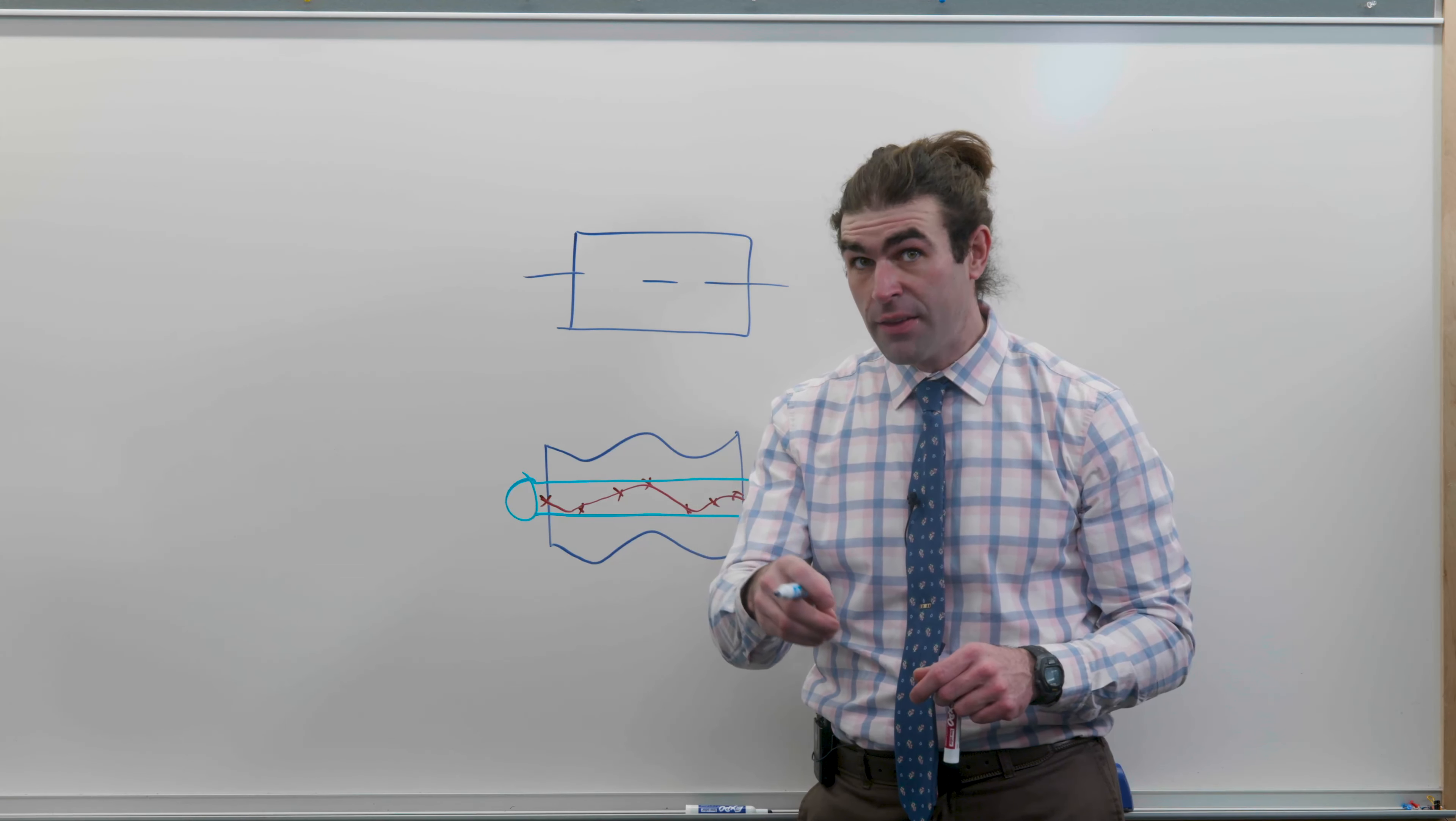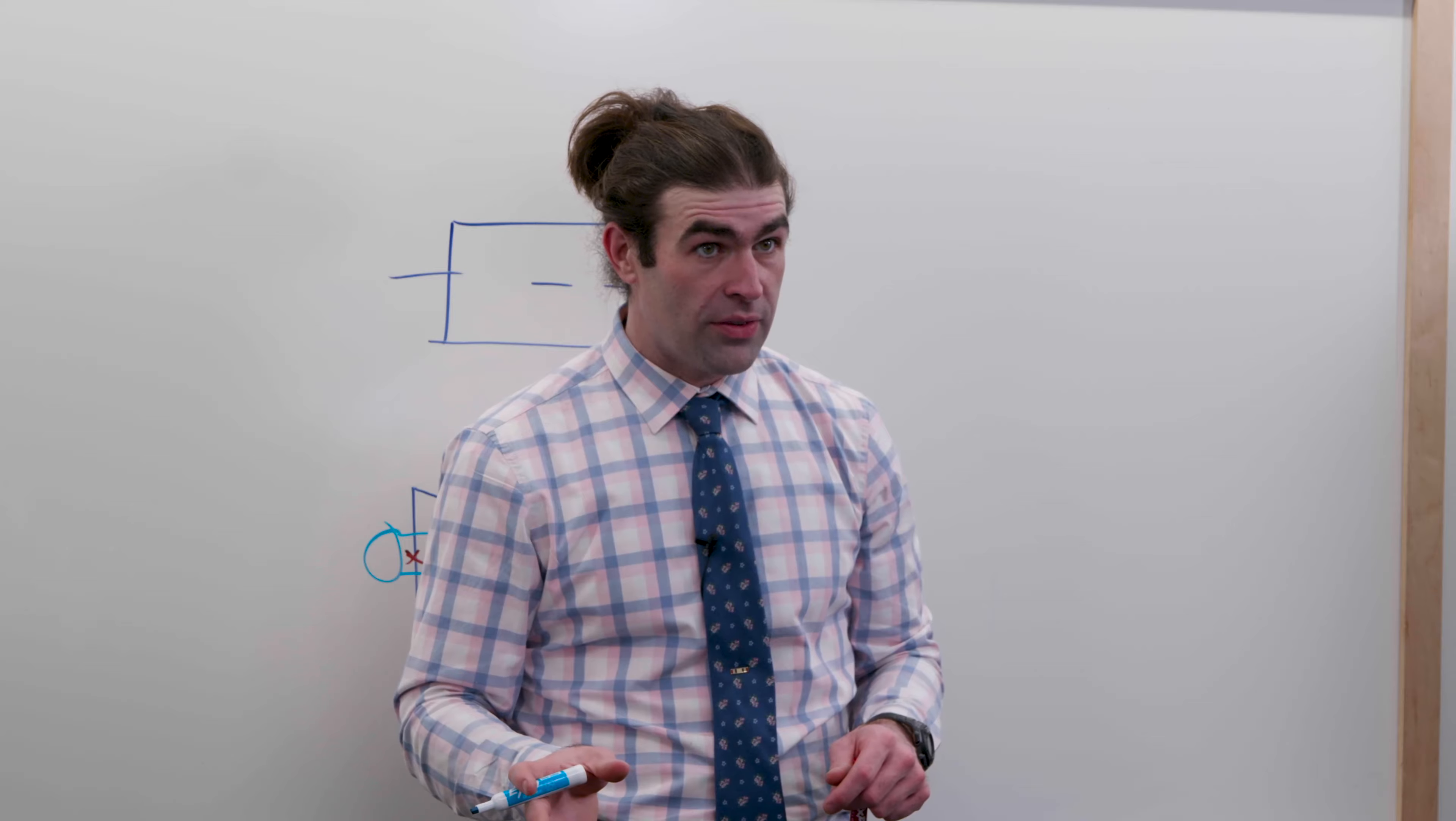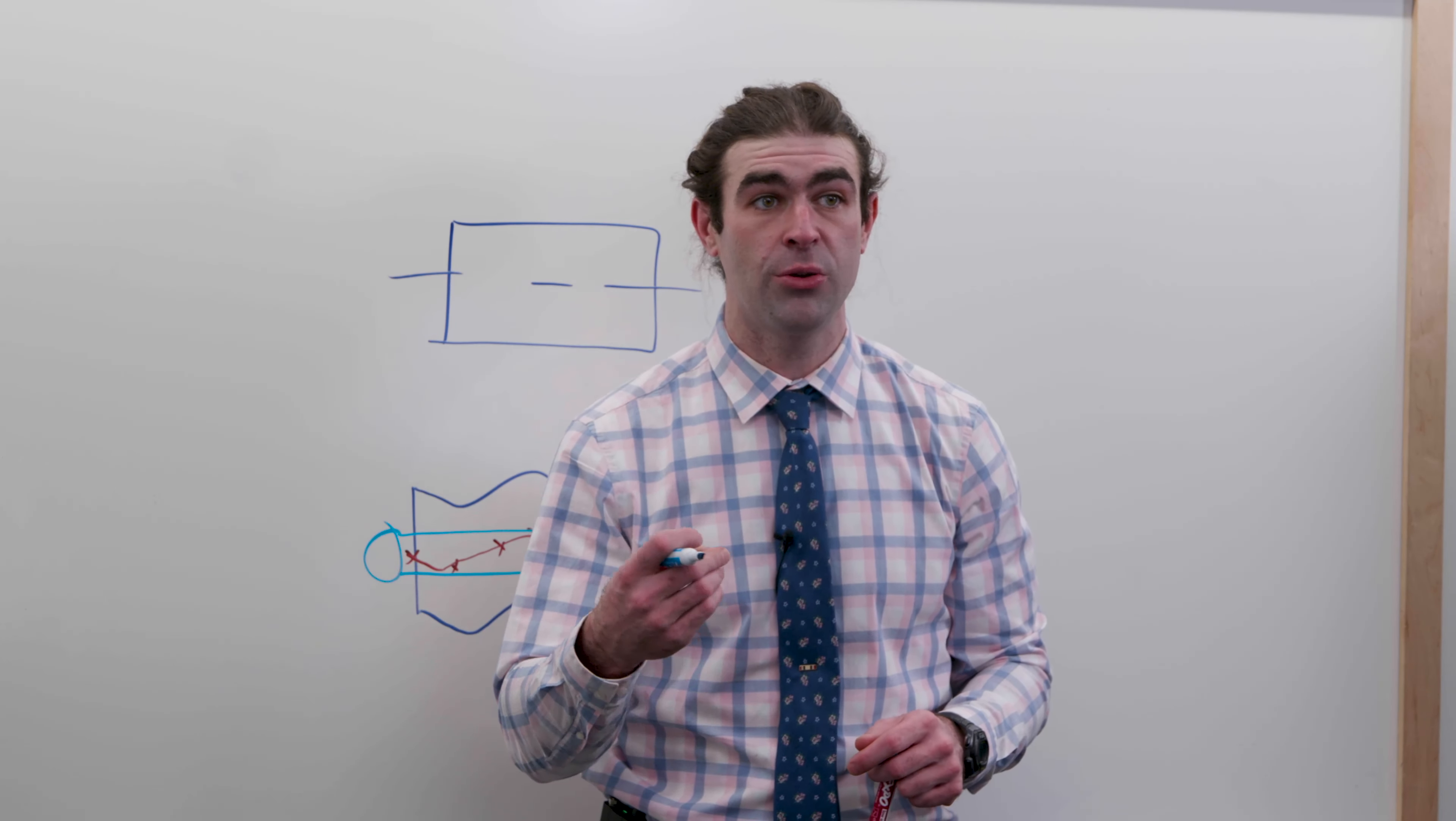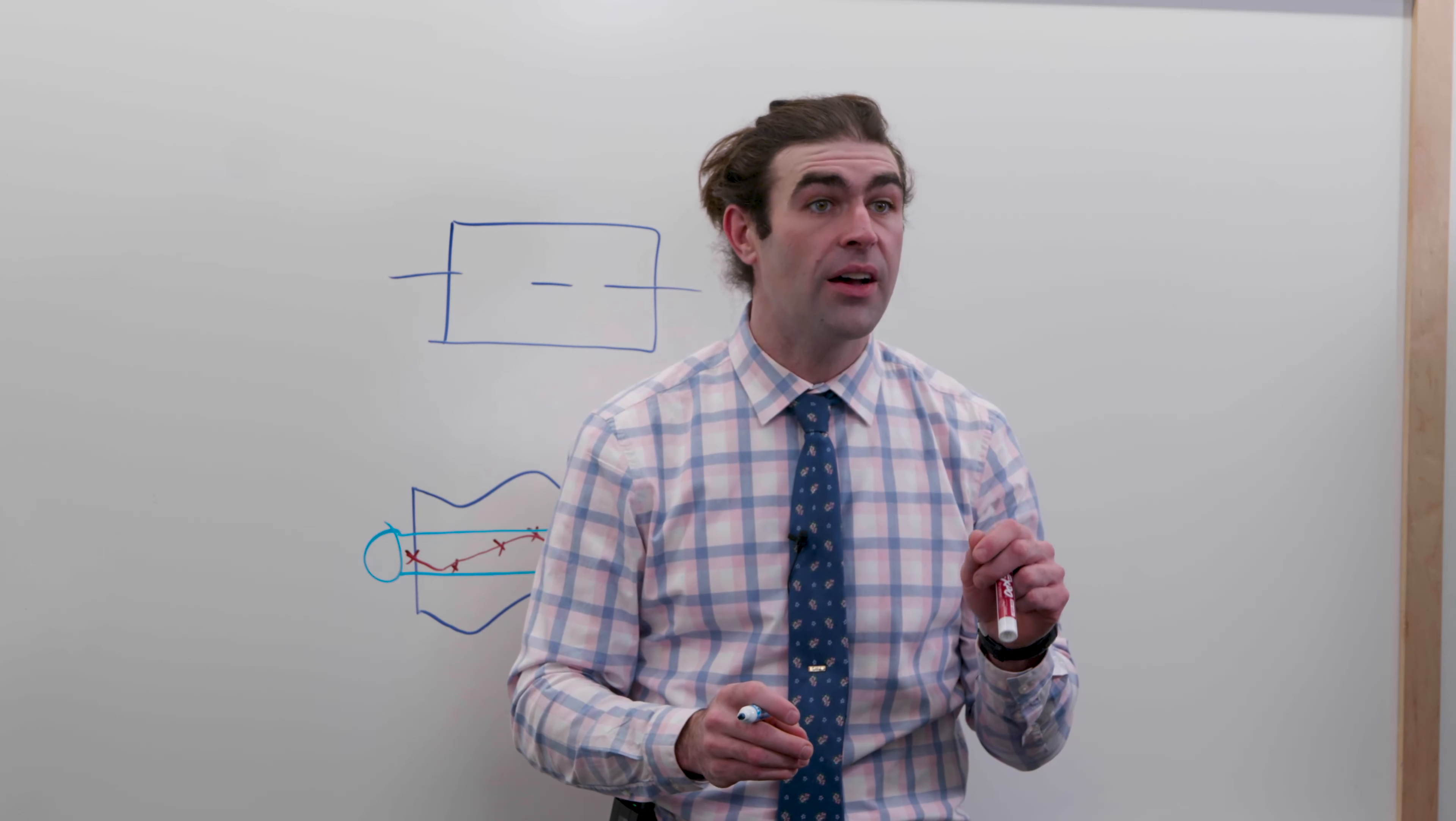The datum reference and the concentricity tolerance must apply at regardless of feature size. No MMC can be used. With straightness, you're just checking the feature to itself, which is kind of difficult. But with concentricity, you're checking that feature to another feature, almost always a cylindrical feature, which gives you an axis. Concentricity is controlling the derived median line of one feature to the axis of another.